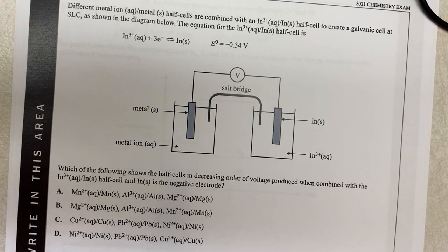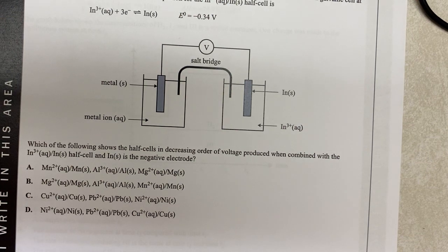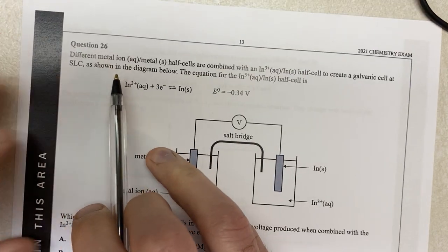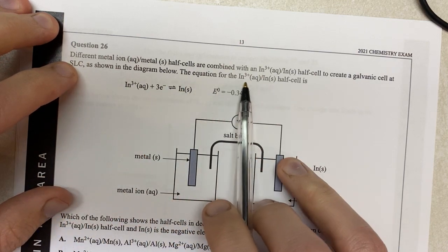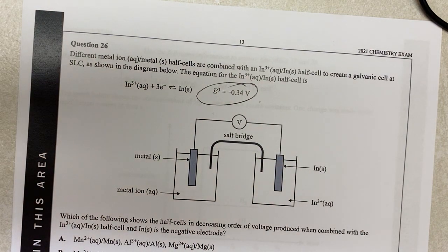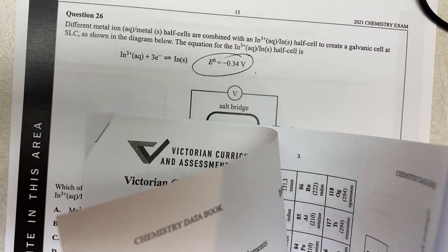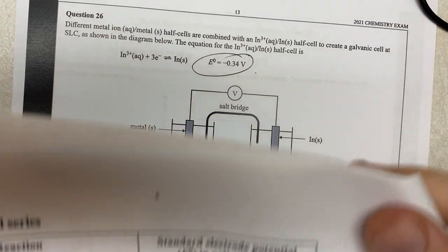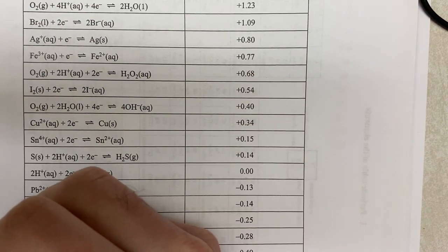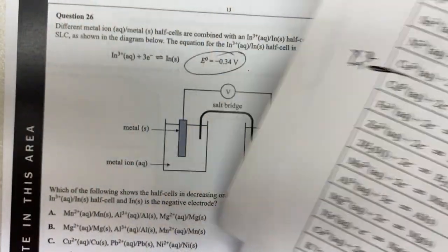Question 25. Different metal ion/metal solid half cells are combined with the indium (In) half cell to create a galvanic cell at standard conditions as shown in the diagram. The equation for the In half cell has an E° value, so I can place that onto my electrochemical series from the back of my periodic table. This guy sits right about here — In³⁺/In solid. So if I know where my E° value is, I can put it onto the electrochemical series and that makes life easier.